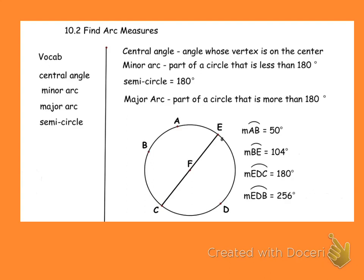We have a lot of vocabulary, as we did in the first section. First you have central angle — that's the angle whose vertex is on the center. Then you have your minor arc, which is a part of a circle that is less than 180 degrees. An arc equal to 180 degrees is called a semicircle, and any arc greater than 180 degrees is called a major arc. Pause the video and write these vocabulary words down to make sure you have them in your notes.